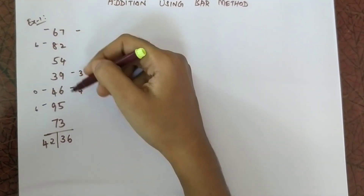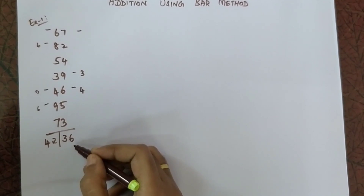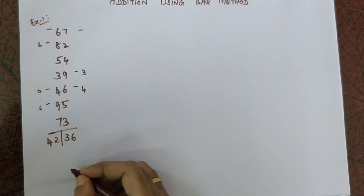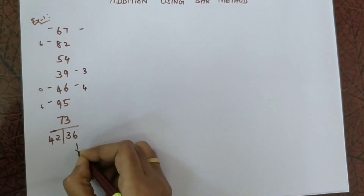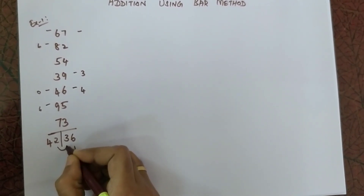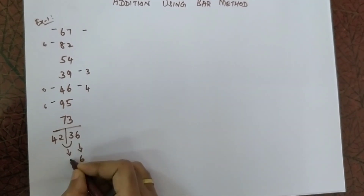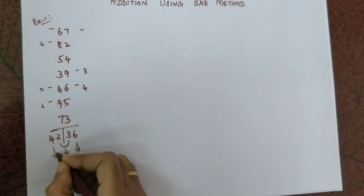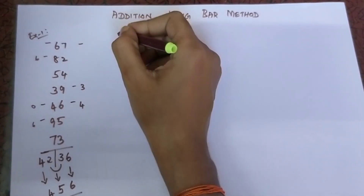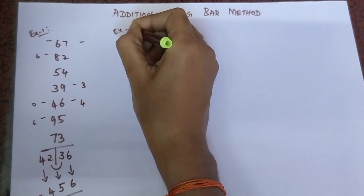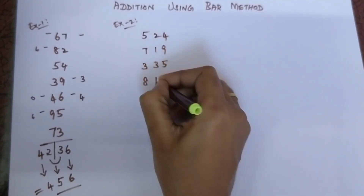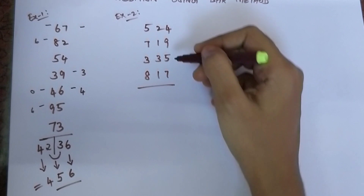By adding all the single digits from this side and this side I got 42 and 36. This is not my final answer. For the final answer, I write the last digit as it is, then add the middle digits: 2 plus 3 is 5, and the first digit as it is. So my answer is 456.